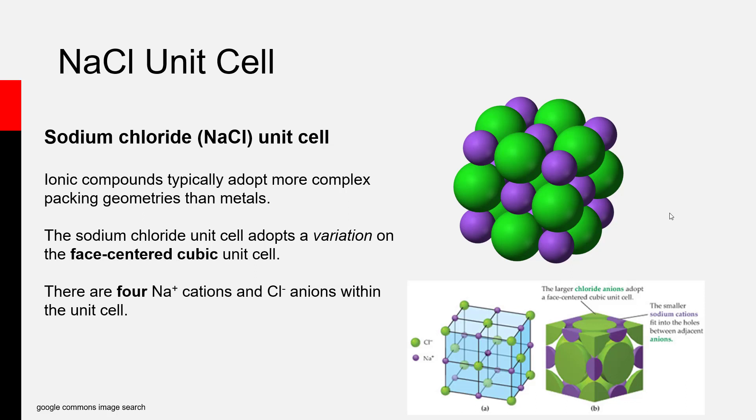If your brain is still intact after that strenuous dimensional analysis exercise where we related the edge length of a cubic unit cell to the density of silver, you may be wondering why we're spending so much time talking about the unit cells and crystal structures of metals, and only elemental metals from the periodic table.